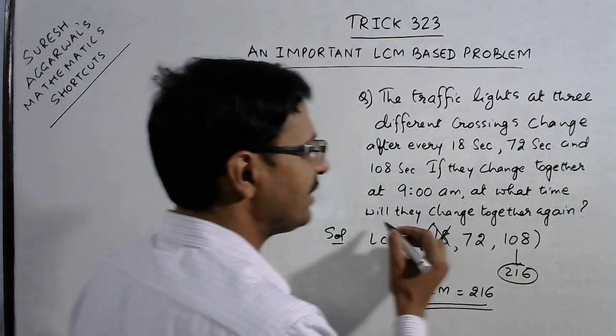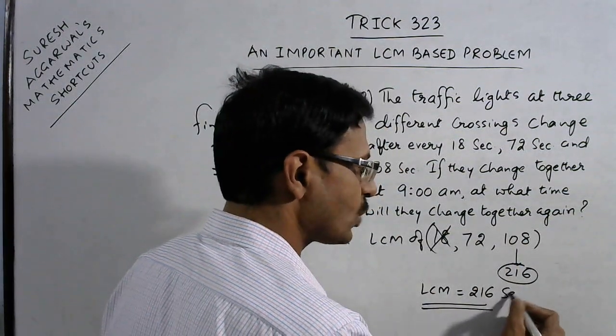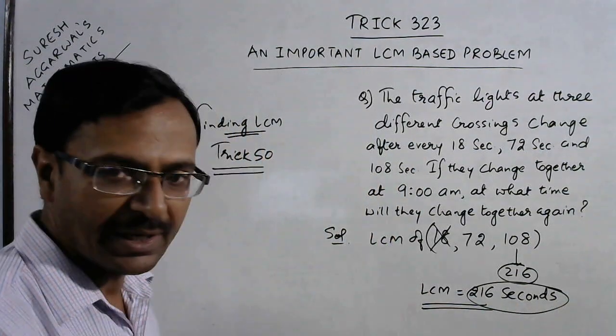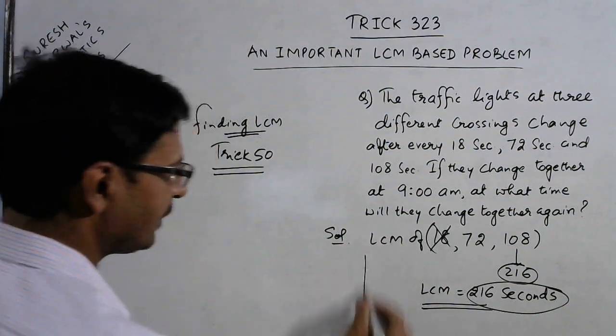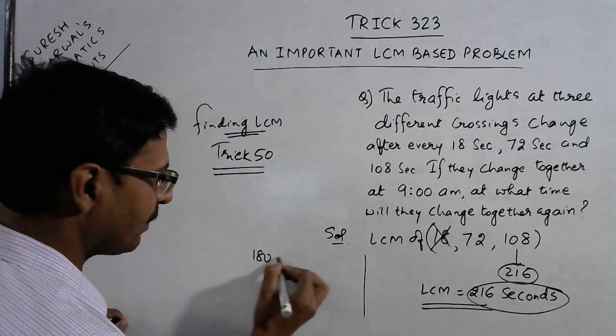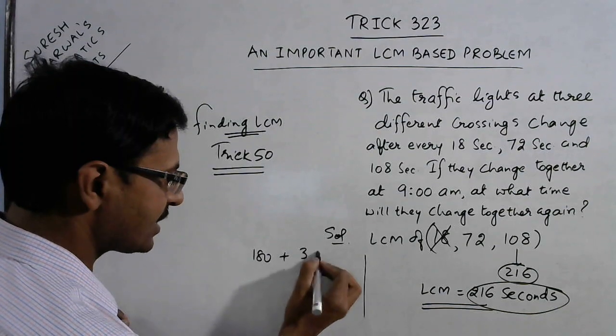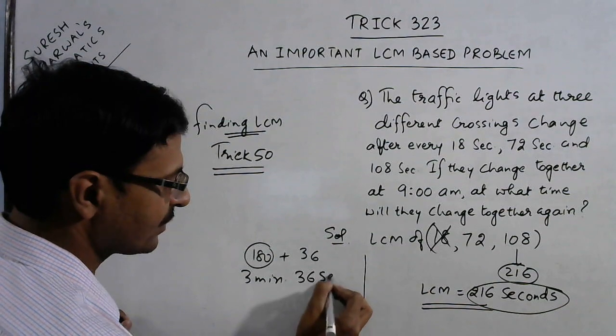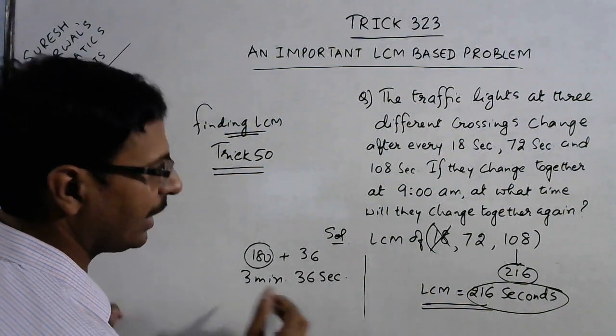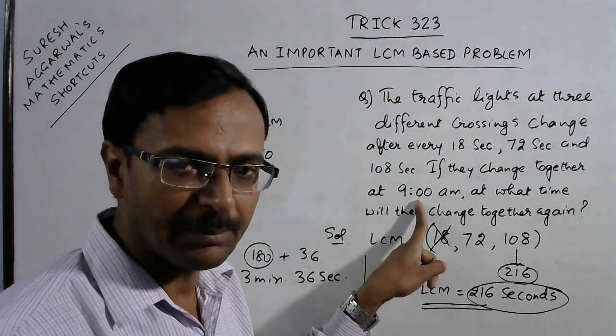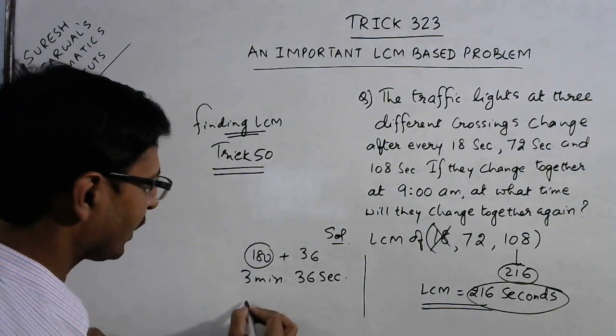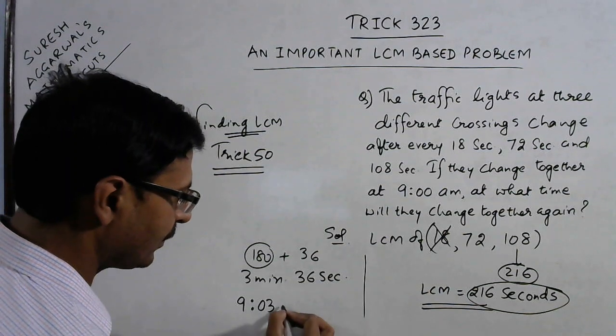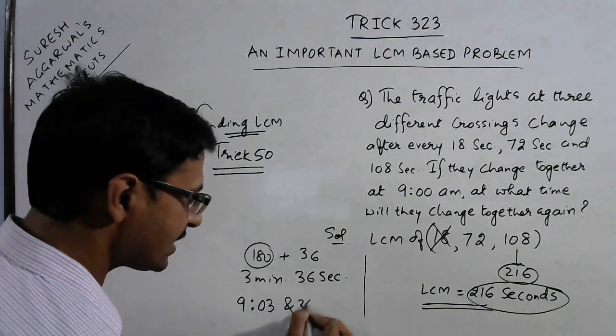Now you can gather your answer very easily. At what time will they change together again? They will change together again after 216 seconds. If you convert that into minutes, 216 is 180 plus 36. This 180 is 3 minutes and 36 seconds, so they will change together again.